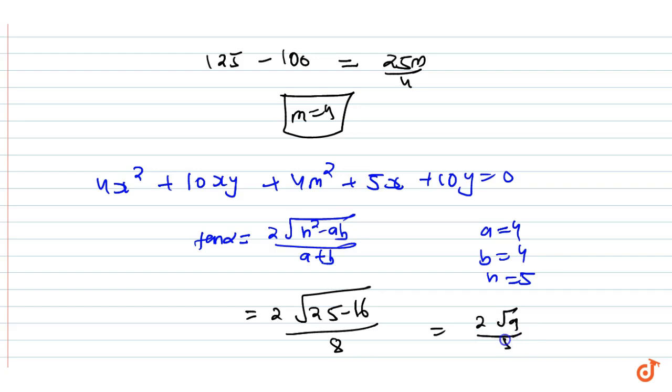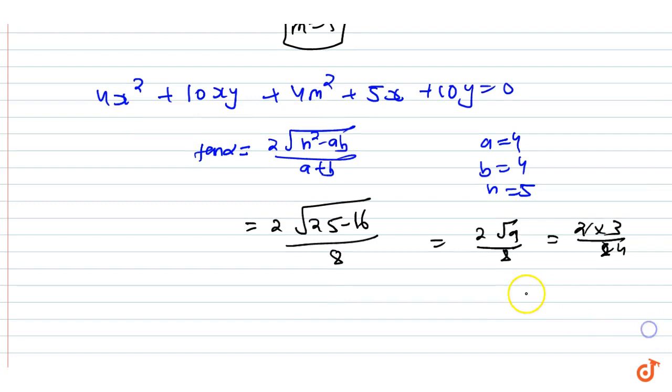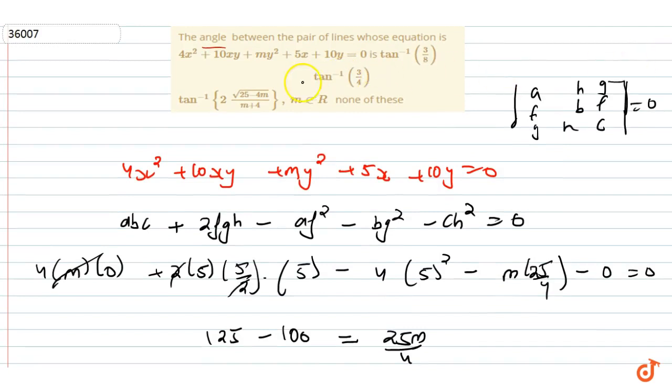This equals 2 times 3 divided by 8, which is 6/8, and 4 cancels to give 3/4. So tan α = 3/4, which means the answer is tan inverse of 3/4, option B.